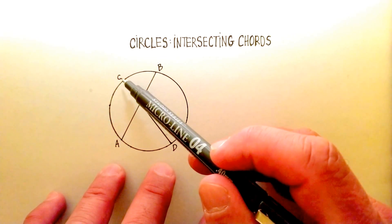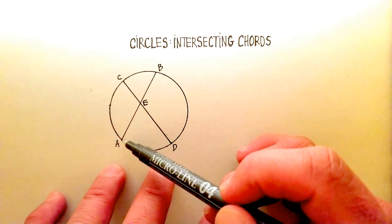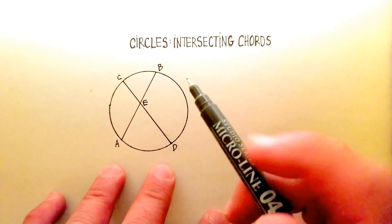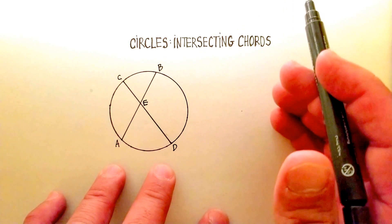In this particular case, we have chord CD, and this particular chord would be chord AB. And in this particular theorem, these two chords are going to intersect at point E.